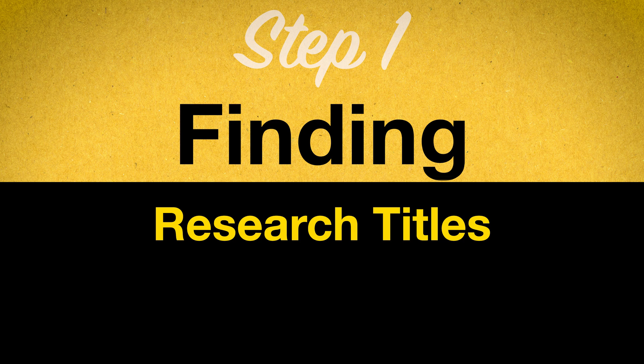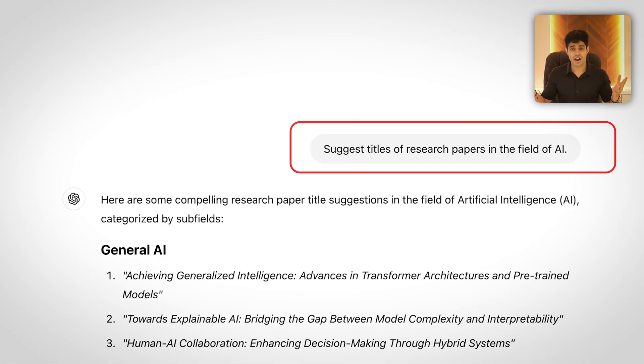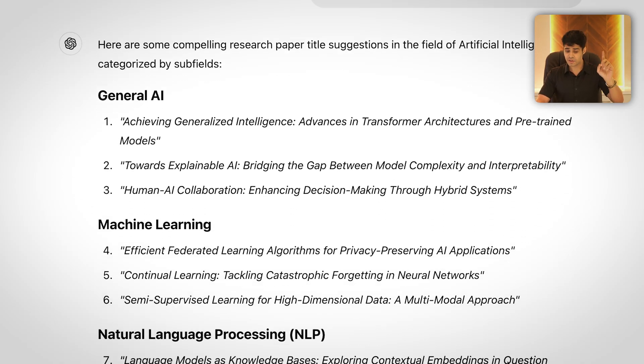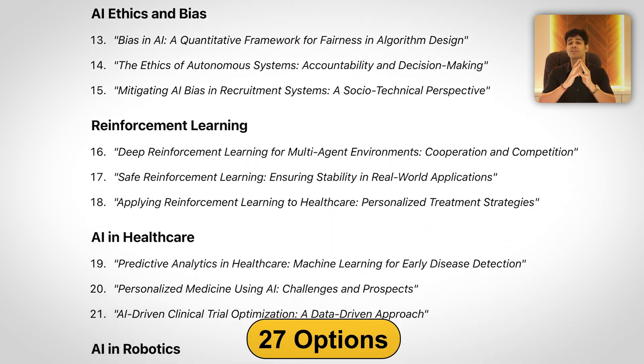Step one: finding research titles. One of the most difficult parts of performing research is understanding where a gap exists — where you should be doing research. Because almost everything you feel like doing, when you search about it online, research papers already exist in that domain. You don't want to do something repetitive that is already done. That's why I asked ChatGPT to tell me about research areas in the field of AI, just to take an example. It gives me a list of 27 good options that I can actually research on, and many of these are areas where research is currently ongoing — so it's not outdated at all.